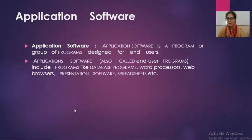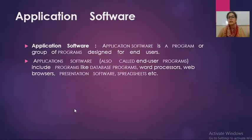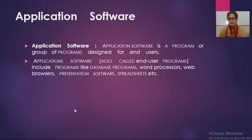A real life example of application software is WhatsApp, which we all use. WhatsApp is not system software — WhatsApp is application software. It is an application that we use to communicate with each other, to exchange messages with our friends, to share images, text, voice messages, etc. This is an example of application software.